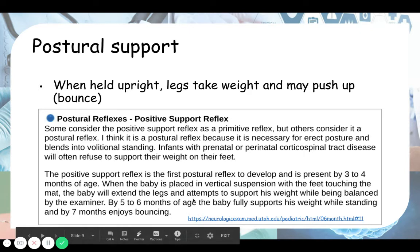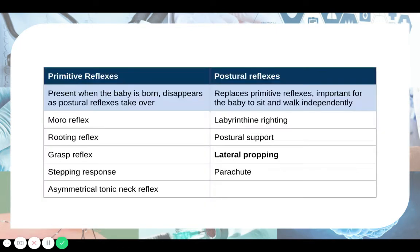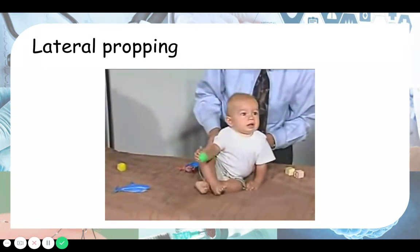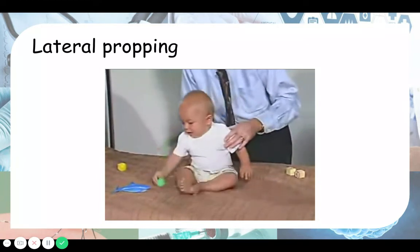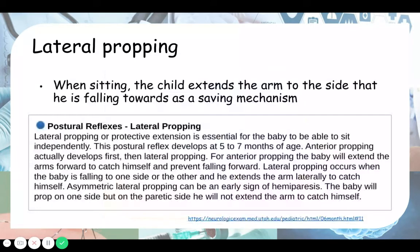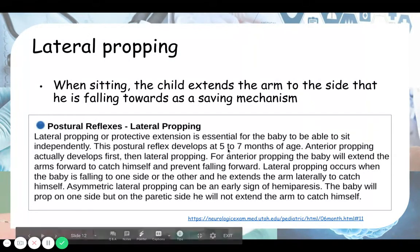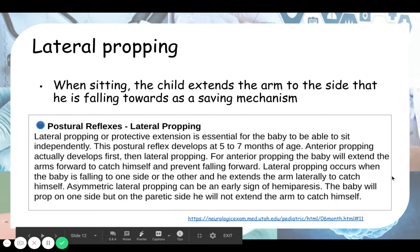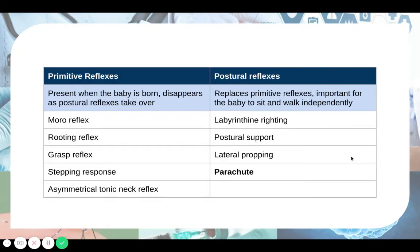The next reflex is lateral propping. In the demonstration, when the child is pushed to the side, he extends his arm laterally and props himself — protecting himself and maintaining balance, though he can't quite fully recover because he's just not old enough for that skill yet. So when sitting, the child extends the arm toward the side he is falling towards as a saving mechanism. This postural reflex develops at approximately five to seven months of age.